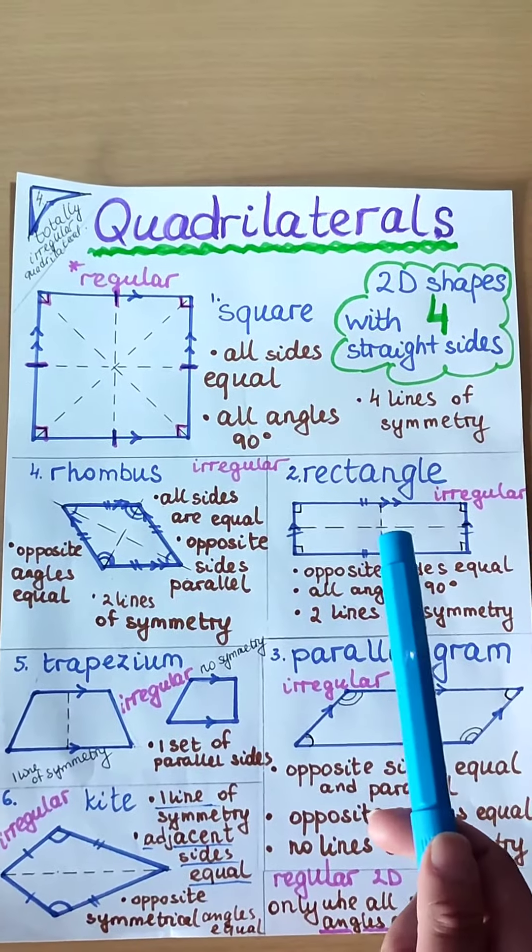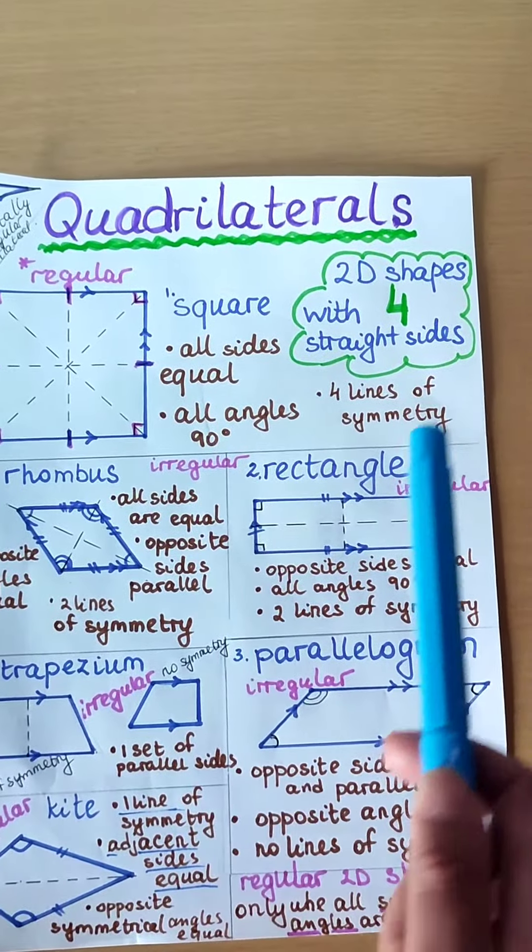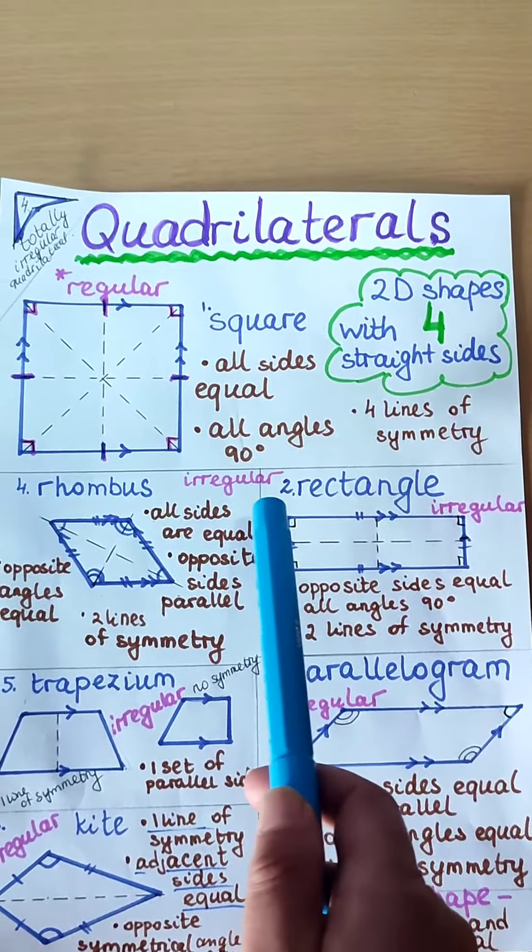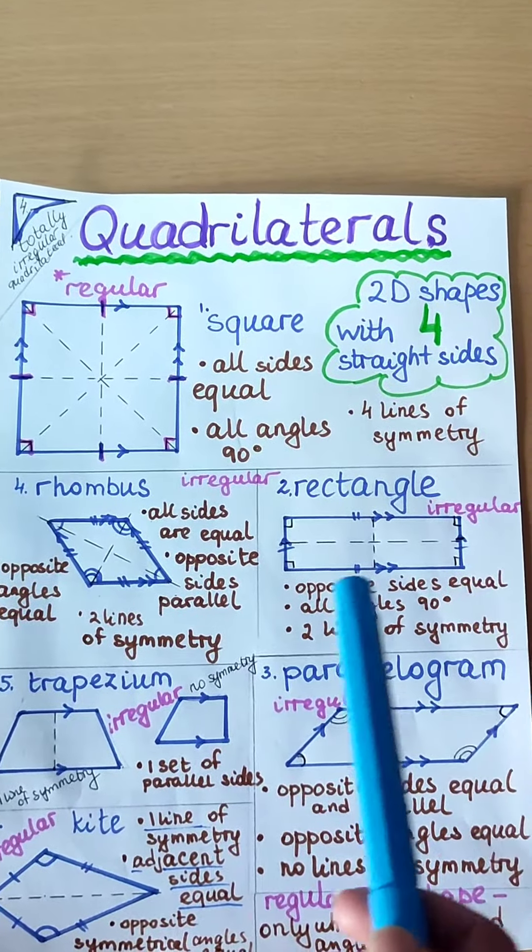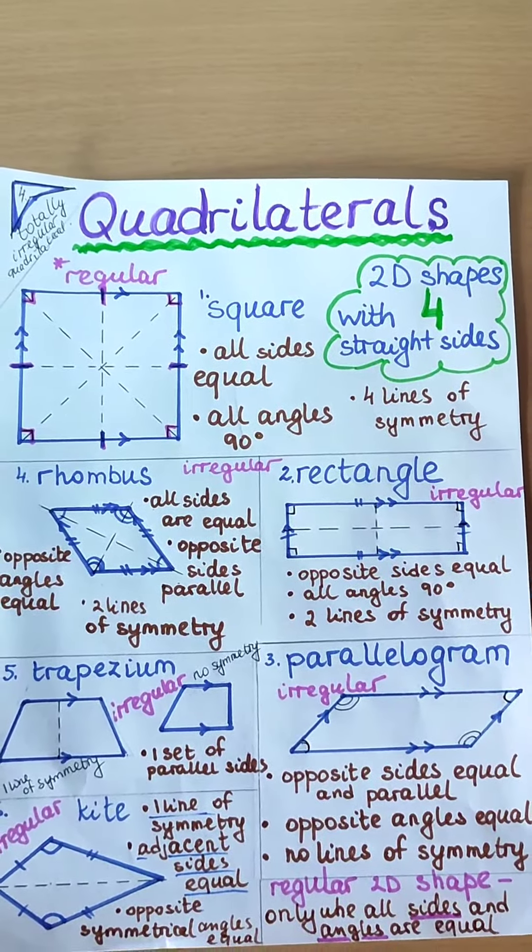This is a rectangle. Rectangle has 2 opposite sides which are the same and the angles are 90 degrees. Rectangle has 2 lines of symmetry.